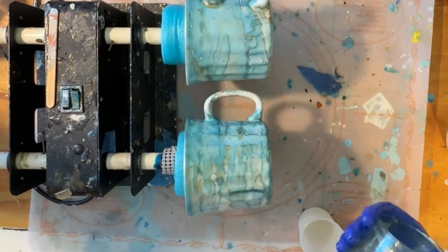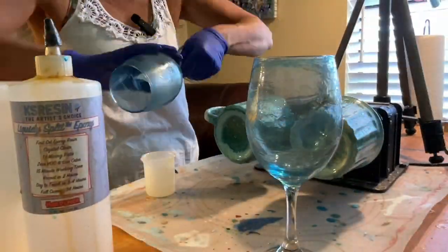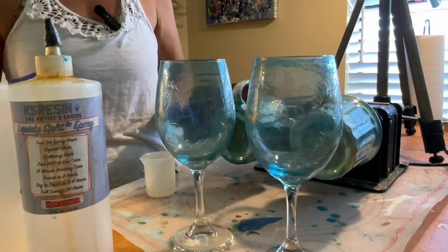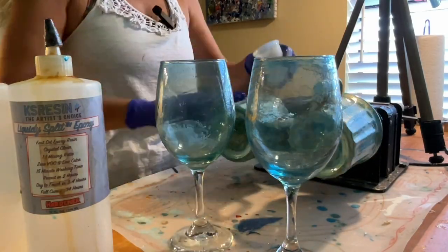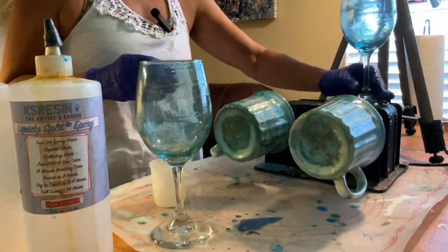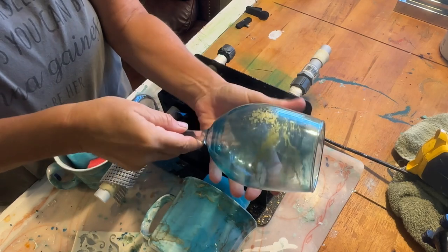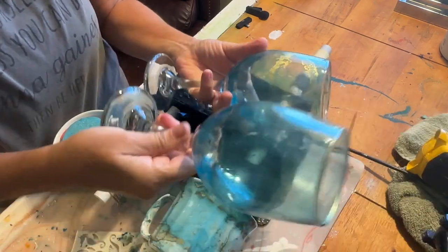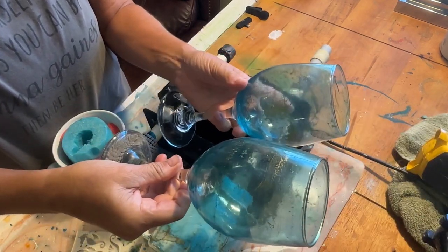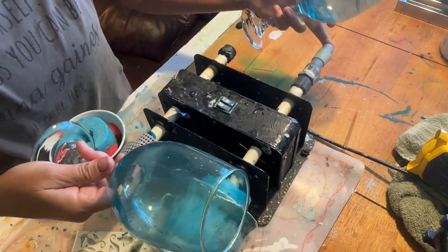But the liquidy split fast set resin really doesn't take long at all for it to set up enough that I won't have to babysit it. These did cure overnight. I didn't have to babysit them more than about 30 minutes and I got no drips. I got no funny spots.